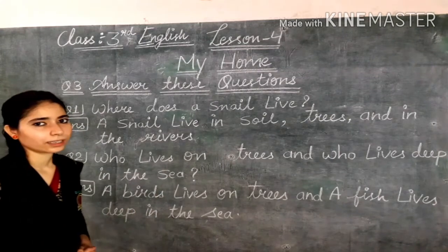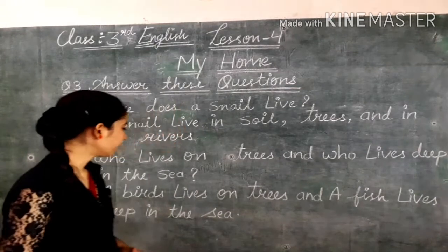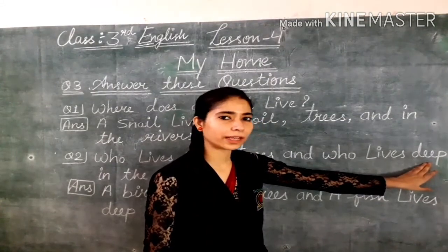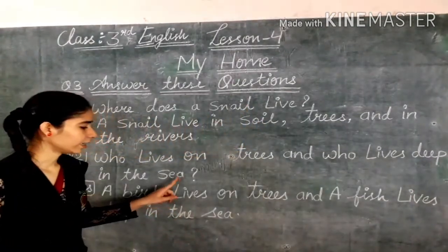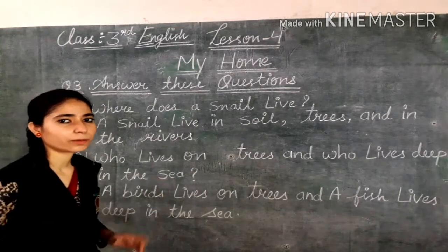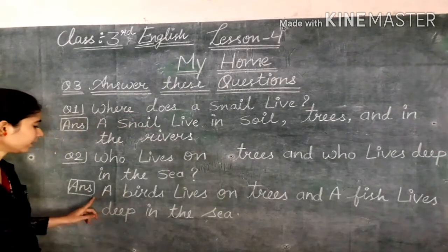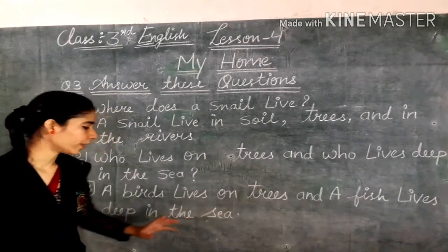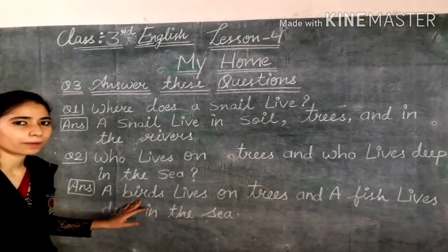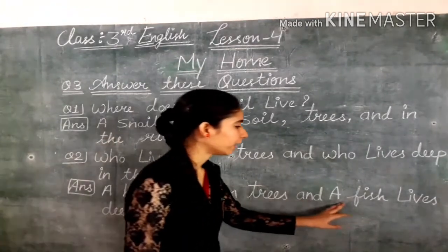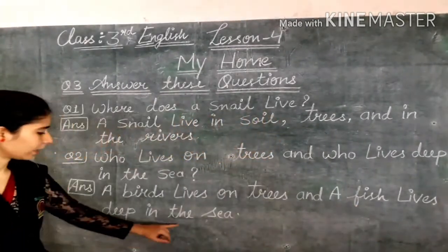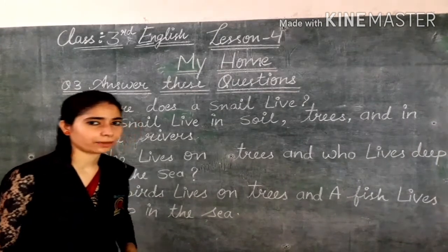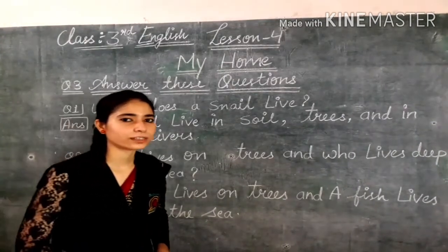Second question: Who lives on trees, and who lives deep in the sea? यानि पेड़ों पर कौन रहता है, और समुद्र की गहराई में कौन रहता है? Deep means गहराई, and sea means समुद्र. Answer: Birds live on trees — birds कहाँ पर रहती हैं, पेड़ों पर — and a fish lives deep in the sea, यानि समुद्र की गहराई में।